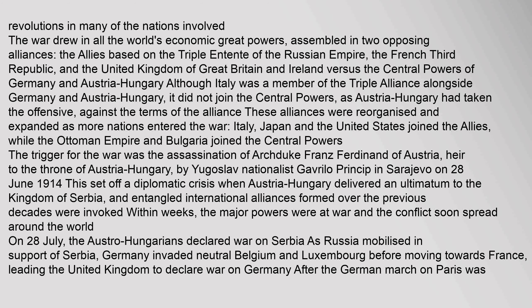The powers were assembled in two opposing alliances: the Allies, based on the Triple Entente of the Russian Empire, the French Third Republic, and the United Kingdom of Great Britain and Ireland, versus the Central Powers of Germany and Austria-Hungary. Although Italy was a member of the Triple Alliance alongside Germany and Austria-Hungary, it did not join the Central Powers, as Austria-Hungary had taken the offensive against the terms of the Alliance. Italy, Japan, and the United States joined the Allies, while the Ottoman Empire and Bulgaria joined the Central Powers.